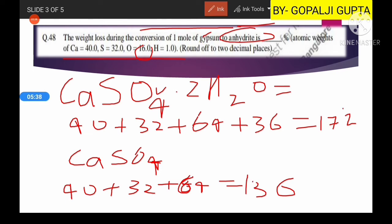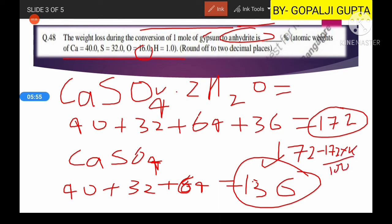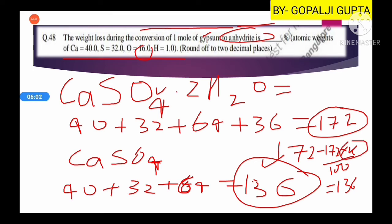Now you can see the total is 172, after removal it is 136. So how much percentage have we lost? We have lost simply by calculating the formula: 172 minus 172's X percent equals 136. So after full calculation you can determine the value of X.